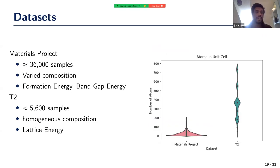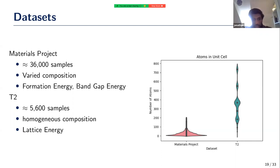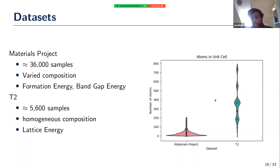We apply this to two datasets. The first is the Materials Project, a common benchmark with about 36,000 samples of compositionally diverse crystals, where we predict formation energy and band gap energy. The second is the T2 dataset, which is much smaller and compositionally homogeneous, where we predict lattice energy. A key difference is unit cell size: Materials Project crystals average about 25-26 atoms per unit cell, while T2 crystals average about 360 atoms, making the resulting graphs much larger.